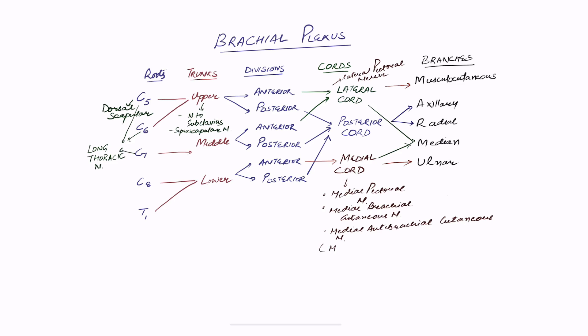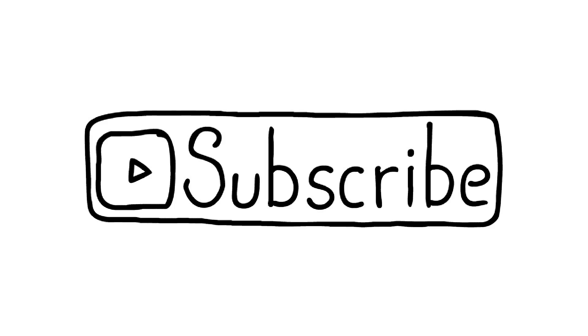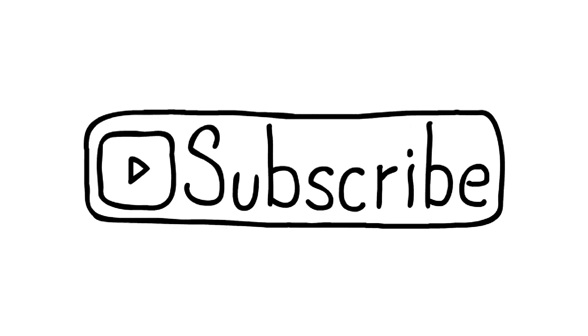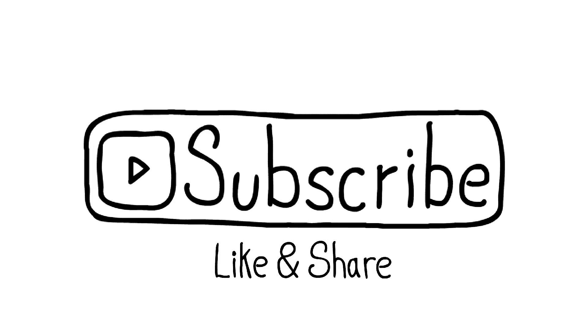If you can remember this much of the brachial plexus, without going into further detail, this is all you need. Roots C5 to T1, upper middle and lower trunks each giving off two divisions, forming the lateral, posterior, and medial cords, with five main branches and some minor branches. Thank you for watching — please like, share, and subscribe to our channel, and visit navmanvideos.com for detailed lectures and more notes.